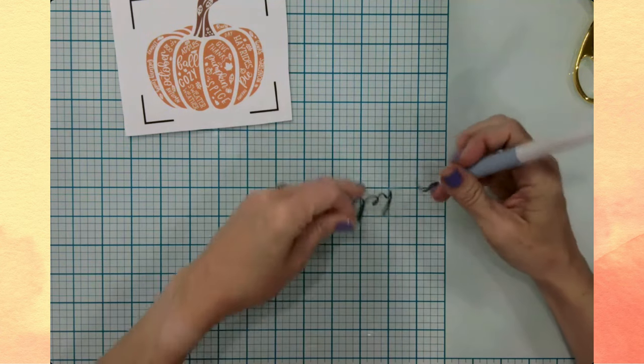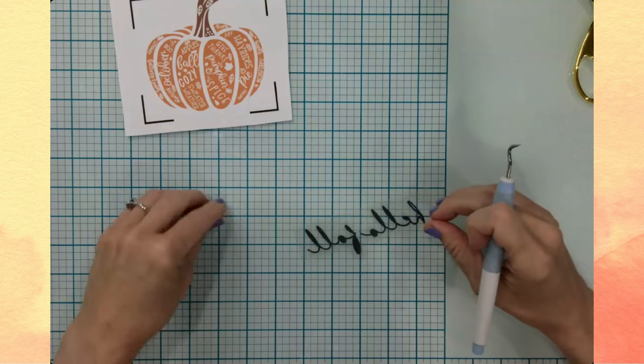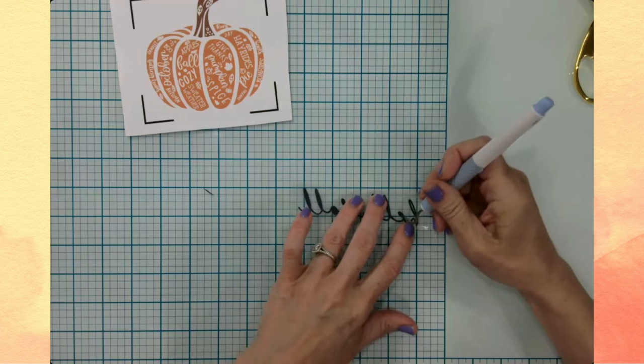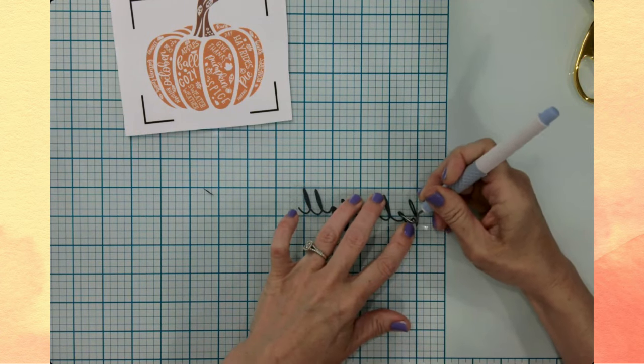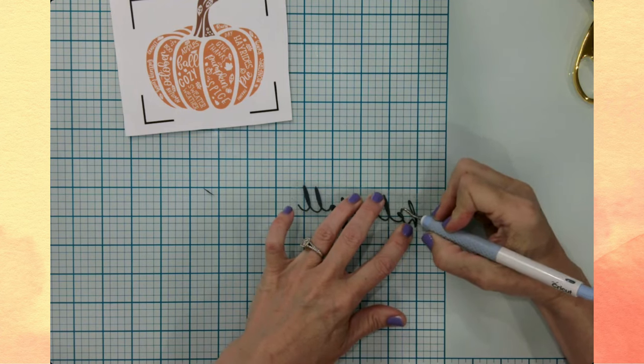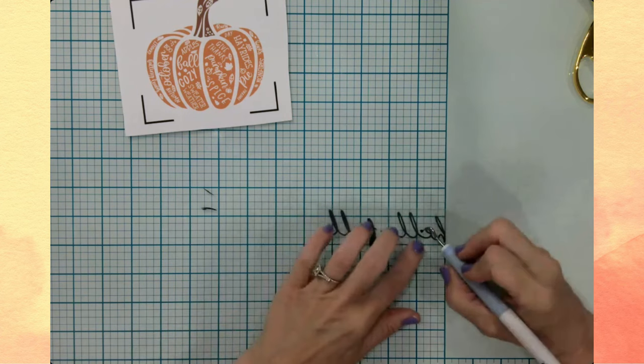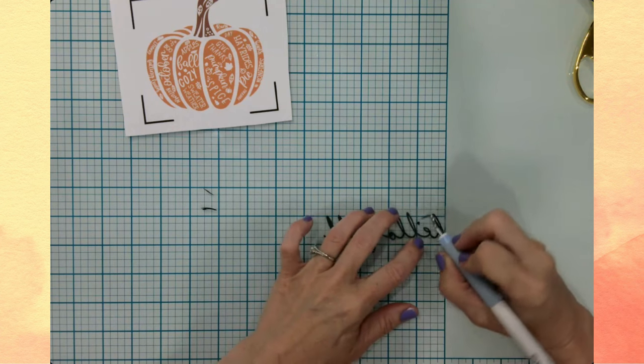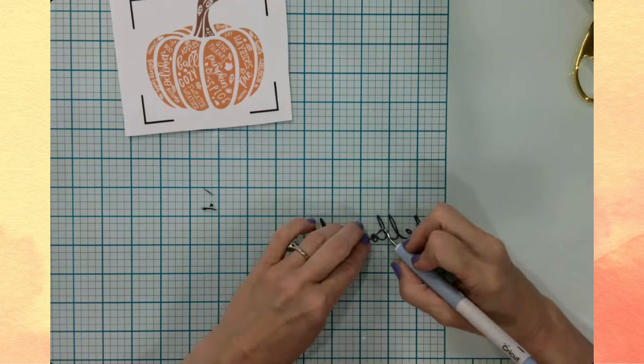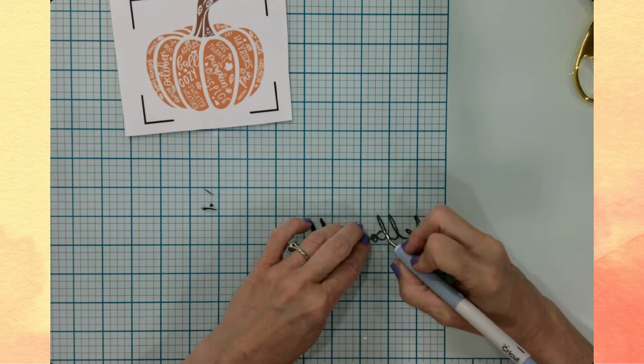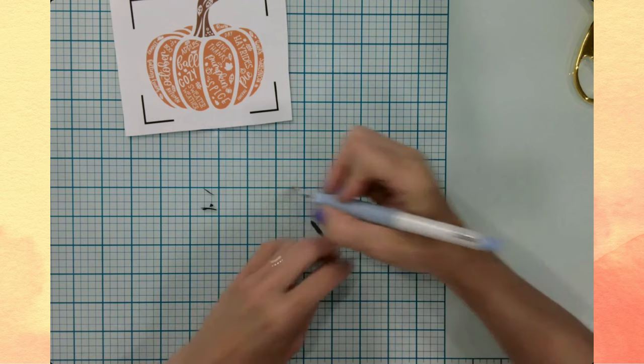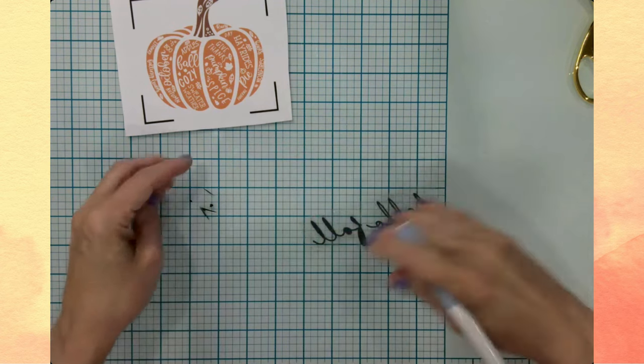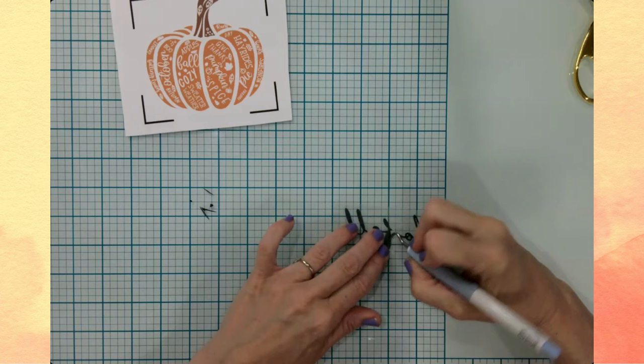I don't want this particular SVG or not SVG. This particular font is actually an SVG. And this is from Design Space. And it just says hello fall. And it is a really sweet scripty font. Looks like somebody's handwriting. Now, when you're weeding your iron-on, it's really good to make sure that you keep track of all the little pieces.